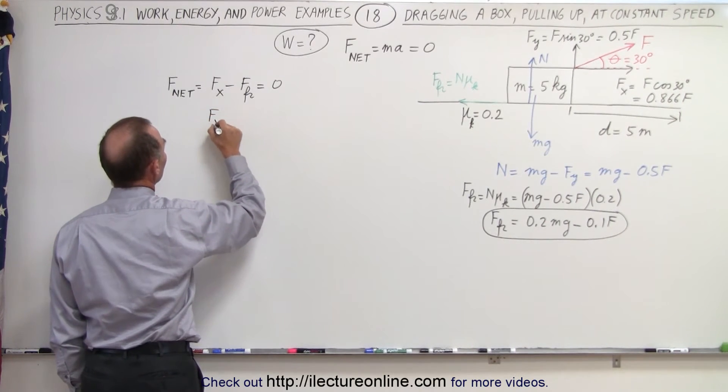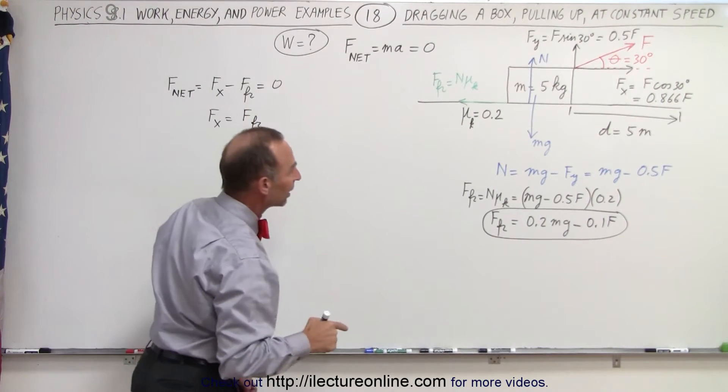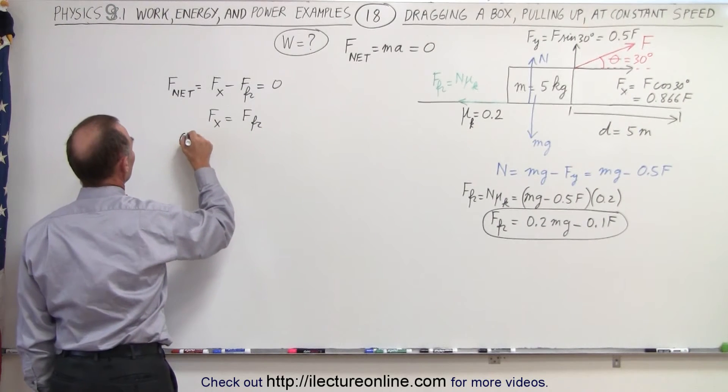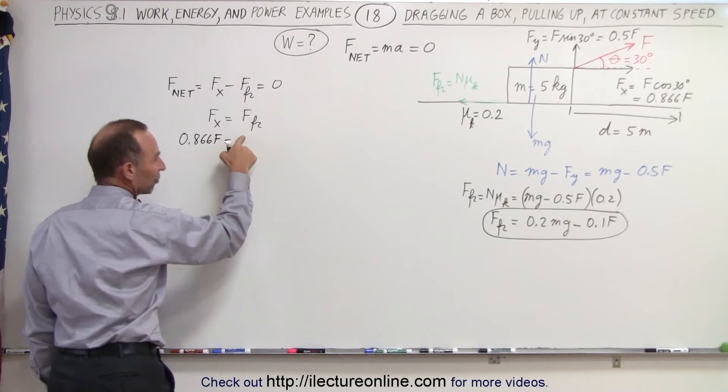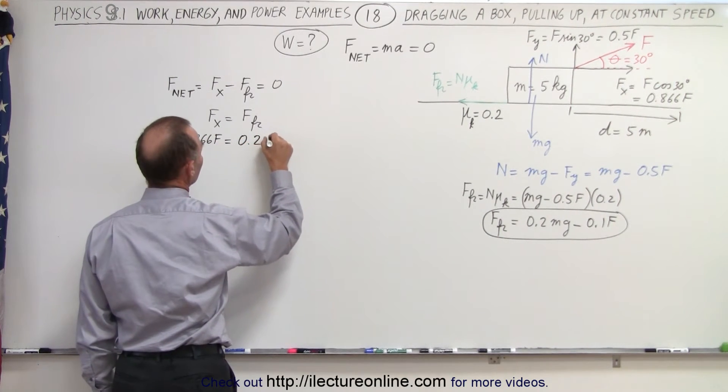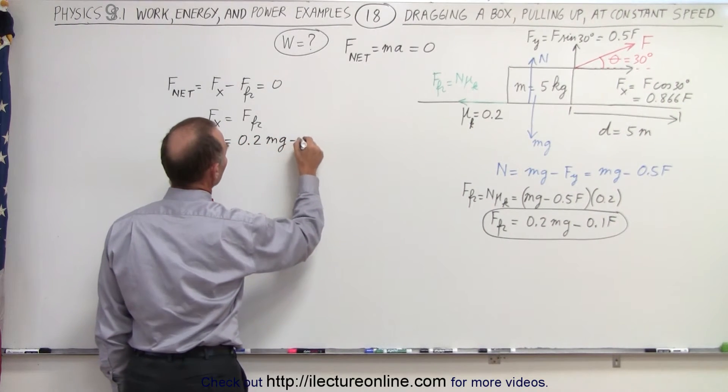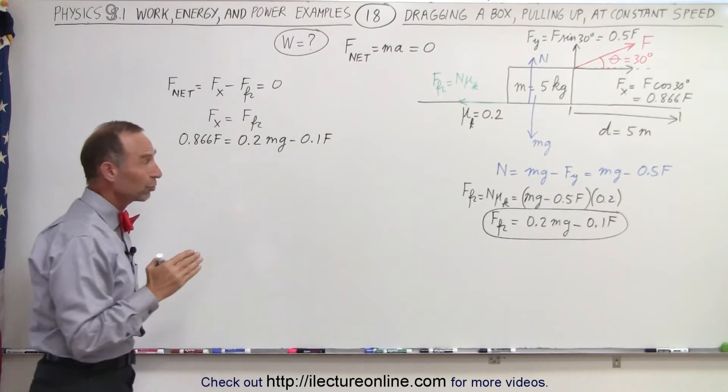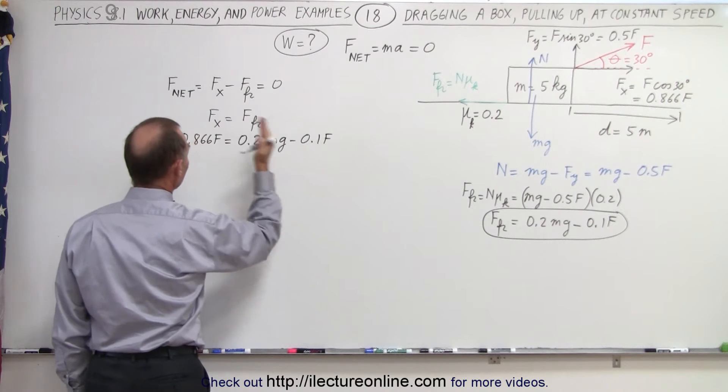So that means f_x equals the friction force. f_x is 0.866f, and 0.866f equals the friction force, which is 0.2 times the weight of the object minus 0.1f.